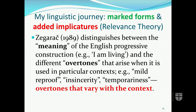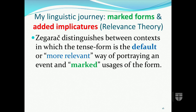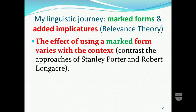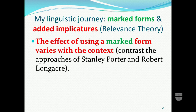Zigaretz also distinguishes between contexts in which the tense form is the default or more relevant way of portraying an event and marked usages of the form. If one tense form is the most relevant way of portraying an event but an author chooses to use a different form instead, to quote Goethe 1991, 'he must have intended to convey special contextual effects.' What is crucial to this relevance theory approach is that the effect of using a marked form varies from context to context — distinguishing it from both Porter and Longacre, who tend to view a marked form as having a global semantic trait.